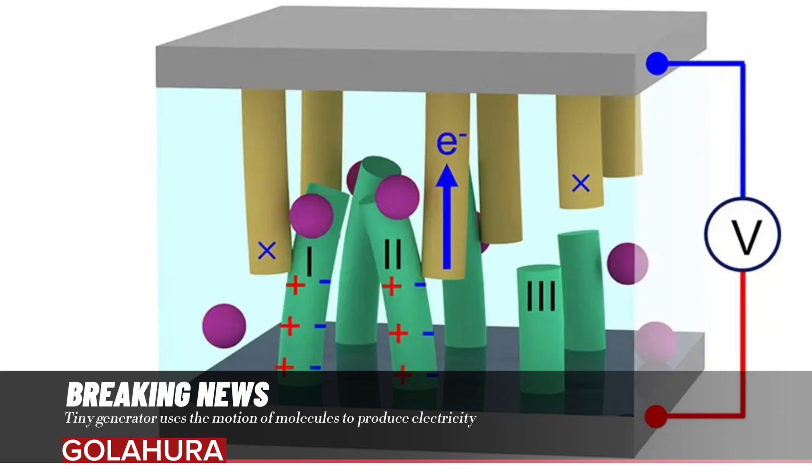The device is just one centimeter square and consists of a top and bottom electrode with several 25-nanometer-wide strands of zinc oxide attached to each. The material was chosen for its ability to generate electrical charge under mechanical deformation.